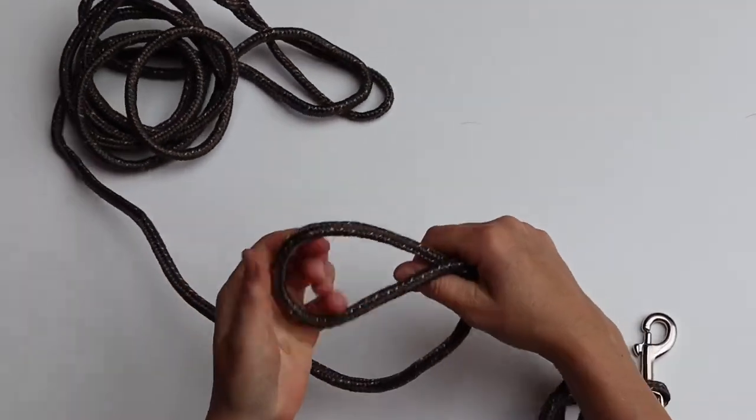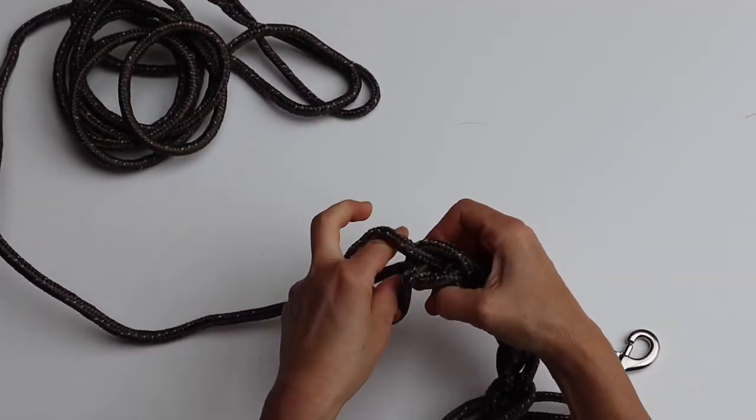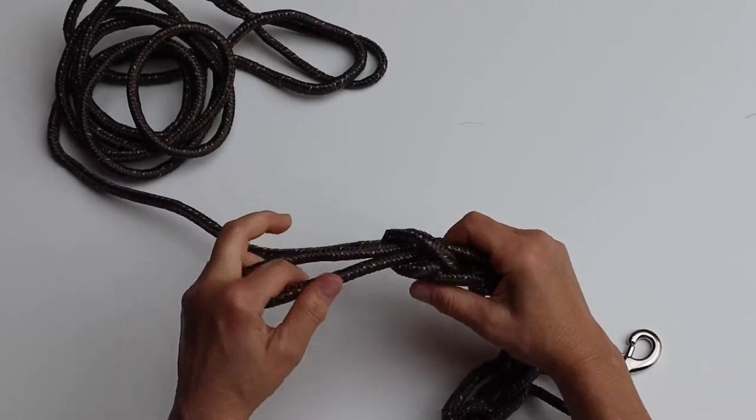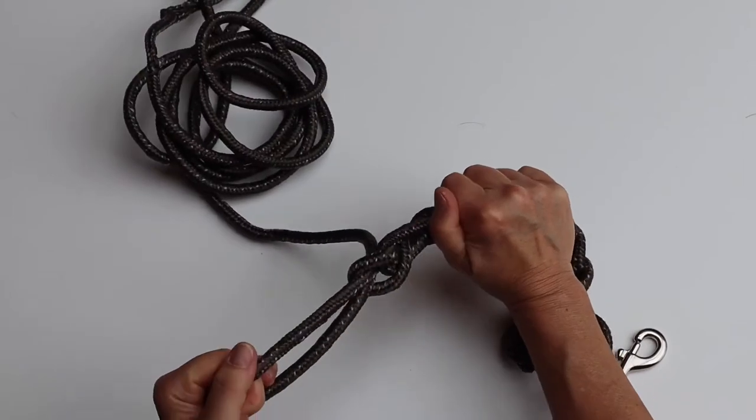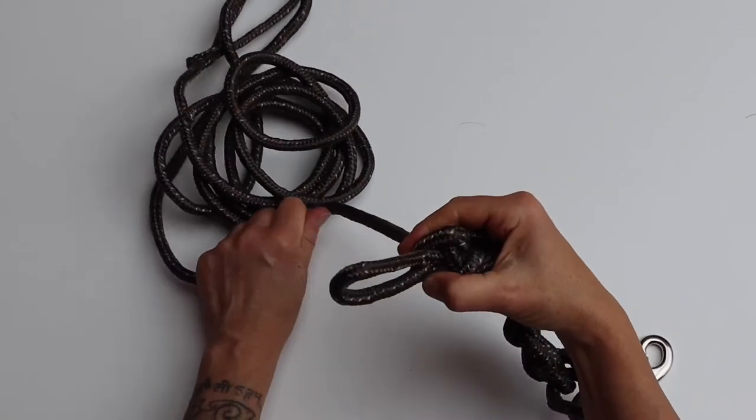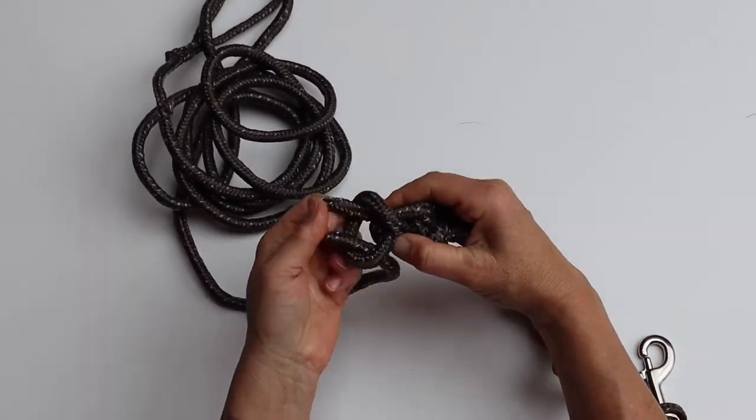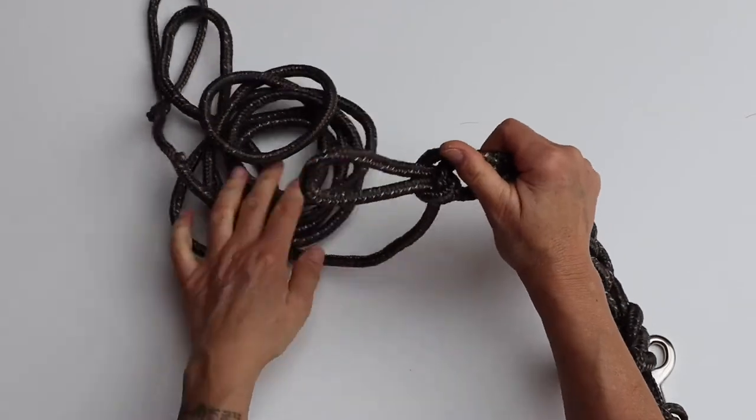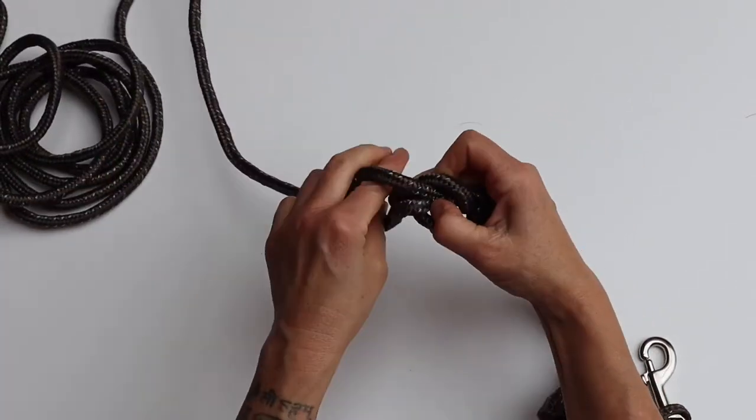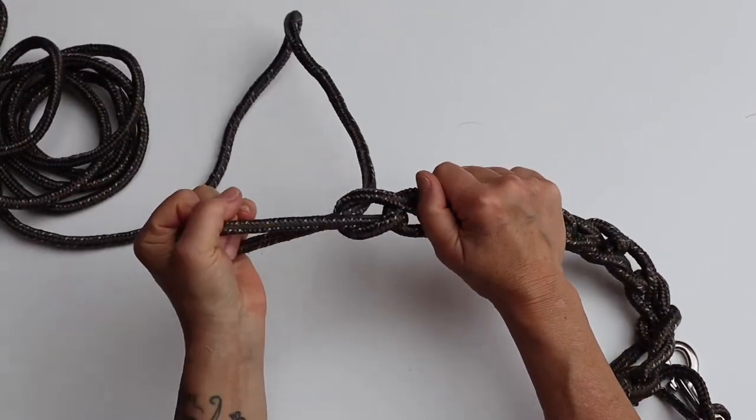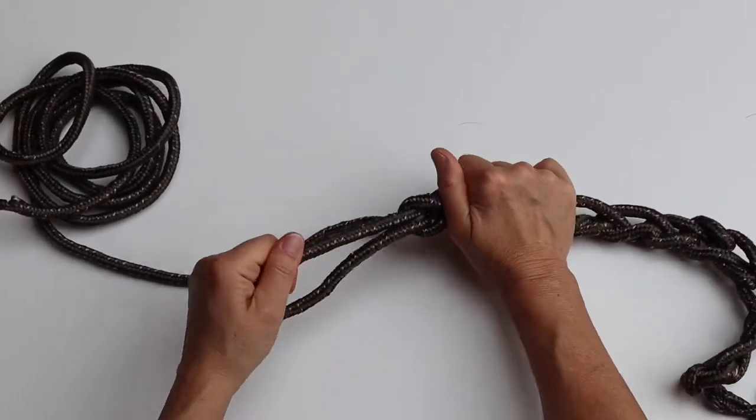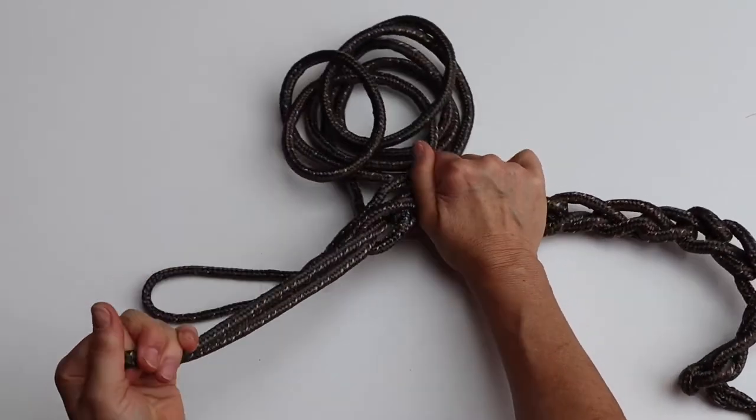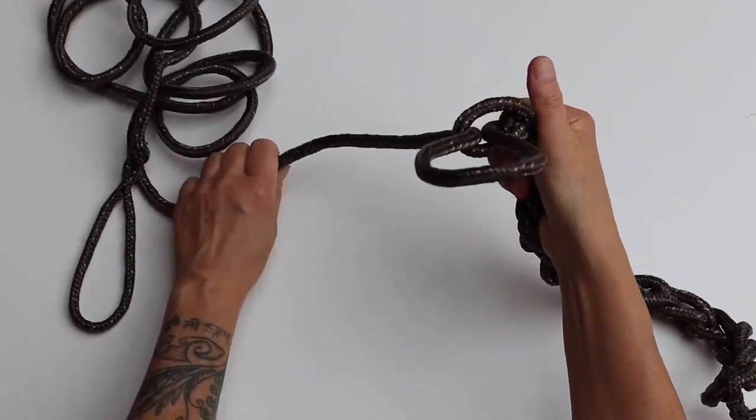You carefully loop the rope starting at the end where the clip is attached, making the loops as tight as possible and working your way to the other end of the training leash which would be the handle where you put your hand through.